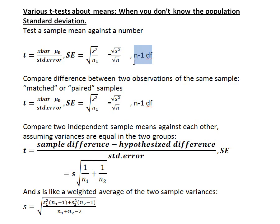With the t-distribution, we need to know the degrees of freedom. For this particular case, we have n minus 1 degrees of freedom — because we estimated a sample mean in order to calculate the sample standard deviation. When you calculate the sample standard deviation, you take the sum of each number minus its mean, squared, divided by n minus 1 to get the sample variance. It's that n minus 1 we see here for degrees of freedom.